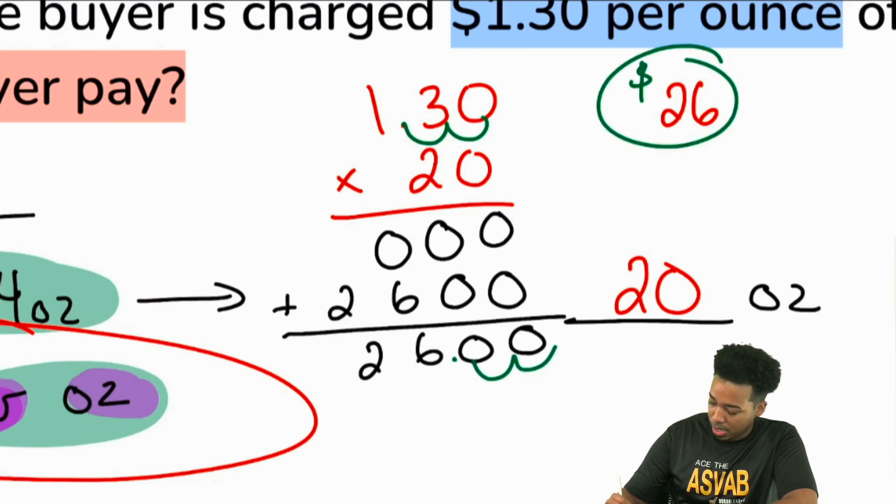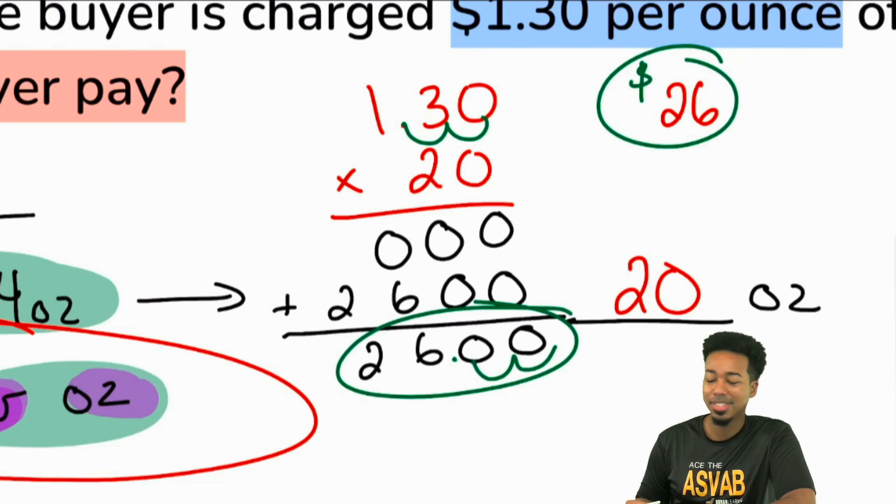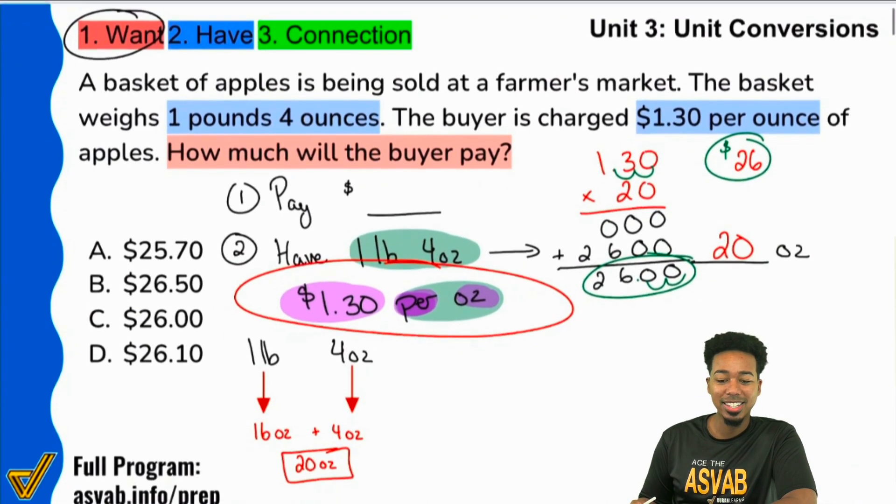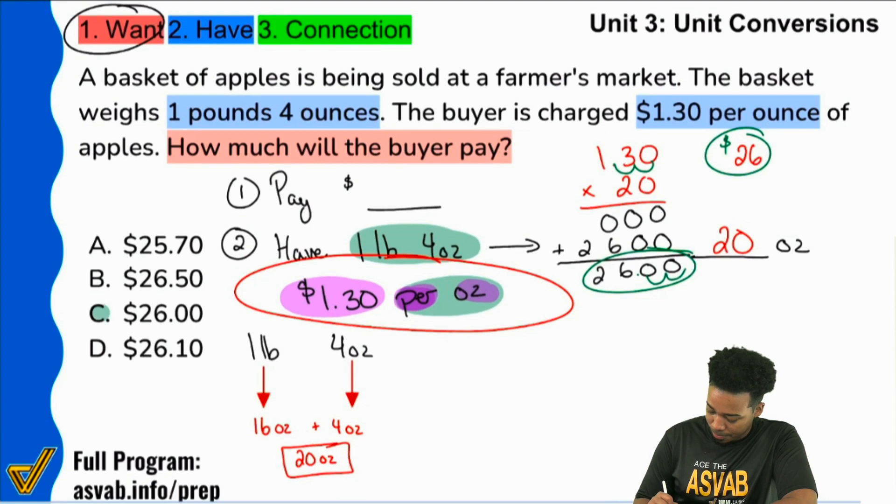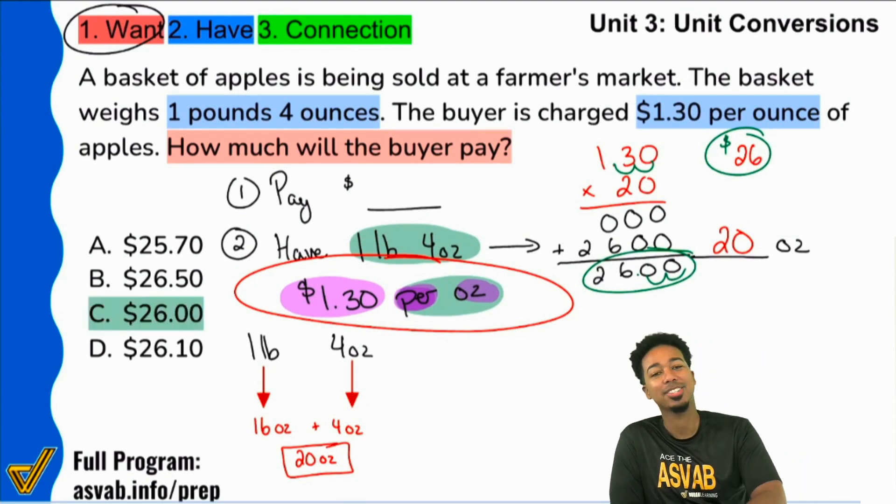So 26 bucks. But that is our final answer. We have ourselves answer choice C as the correct one.